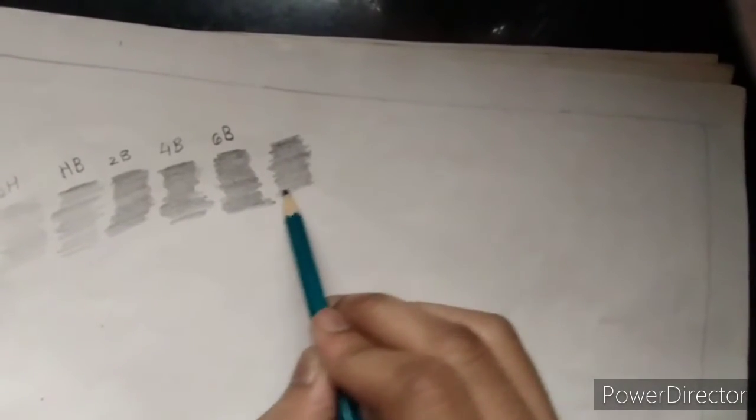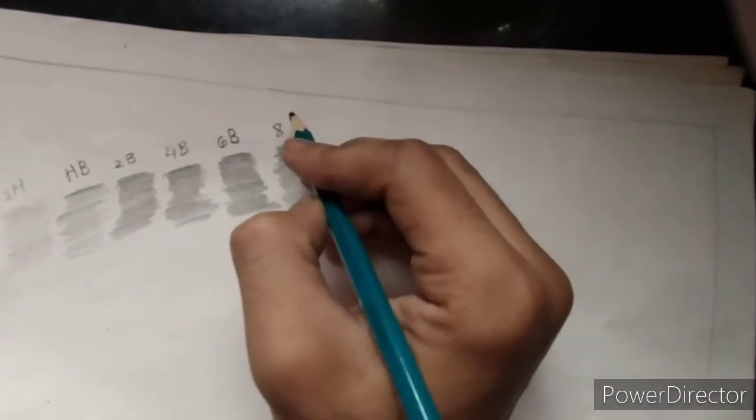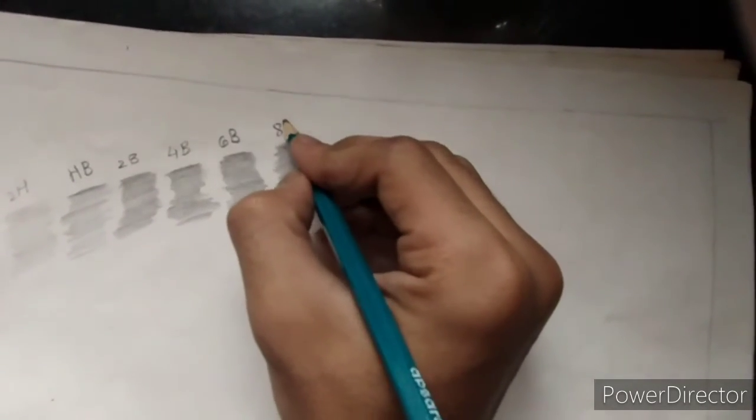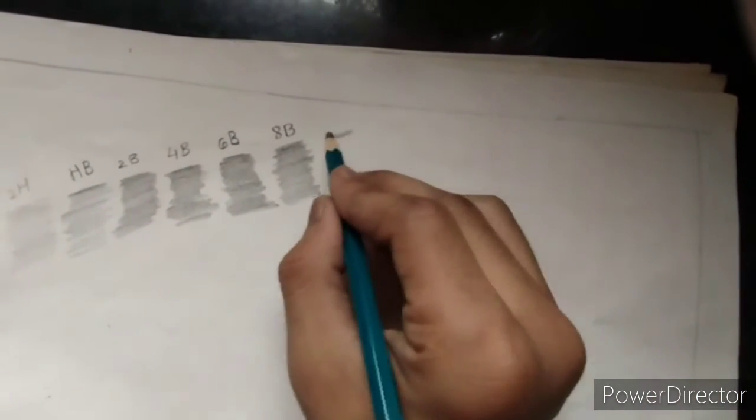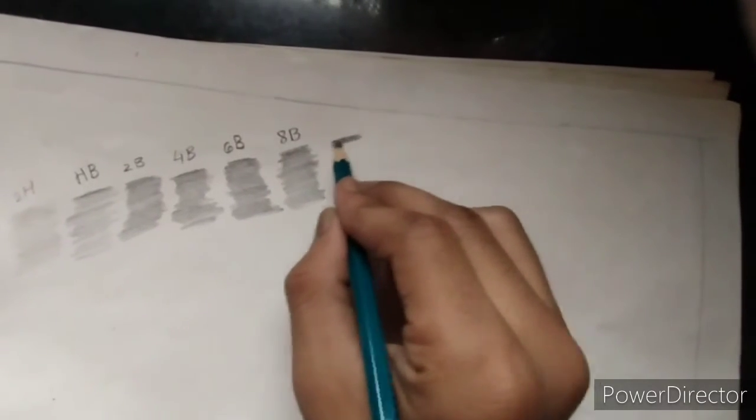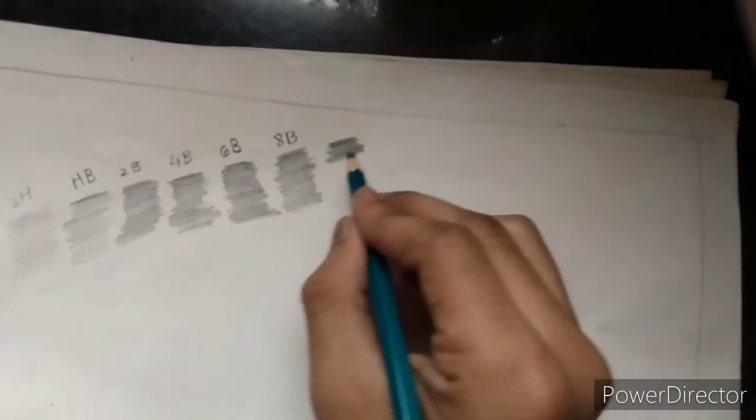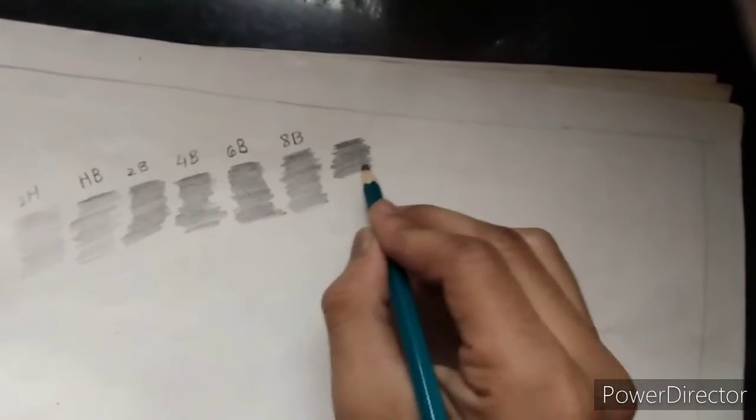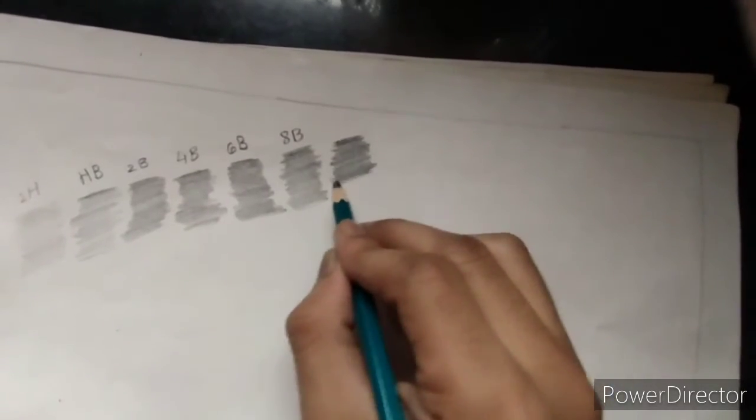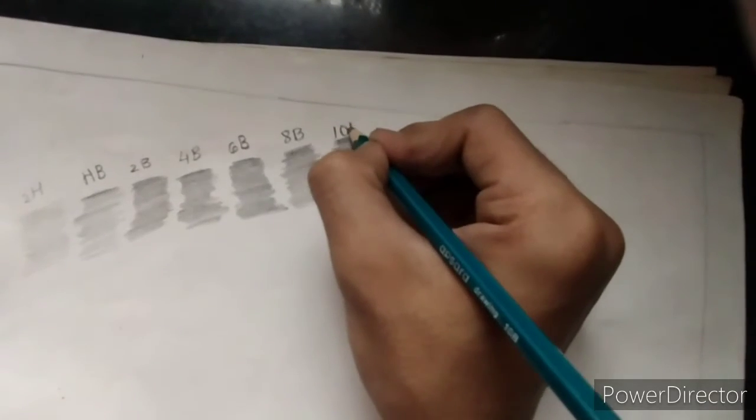In between this there are also many grades as 3B, 5B, and then F, 2F like that. 9B is also a pencil. But I have this 6-7 pencils, so I made this video. This is 10B.